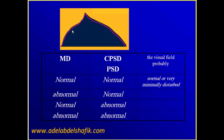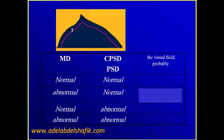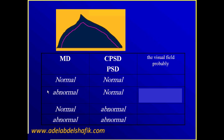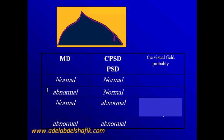Scenario two: if you have the mean deviation abnormal and low, while the pattern standard deviation is normal, it means that the whole field is depressed homogeneously. It is a pure generalized depression of the field, as shown in the drawing.